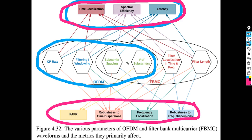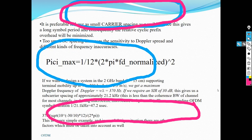As you can see, the parameters have direct influence on the performance of your system in terms of different metrics — whether latency, bit error rate, spectral efficiency, robustness to frequency dispersion, time dispersion, or frequency localization. The goal is to understand these relationships so that you can design the systems properly.